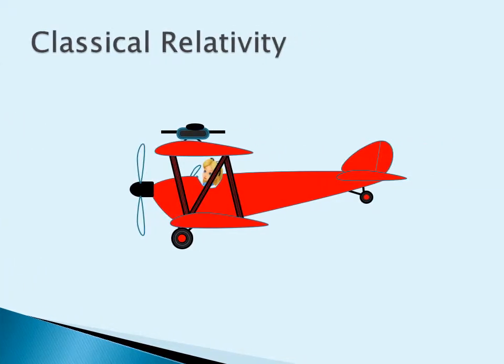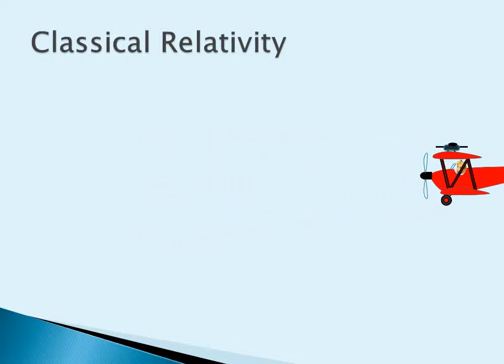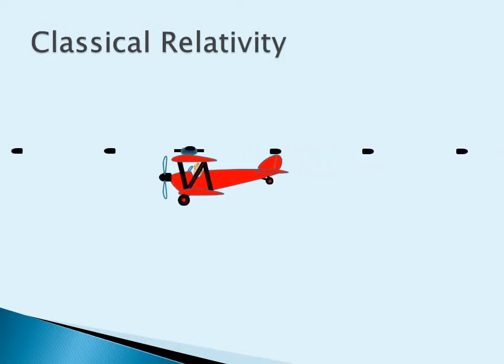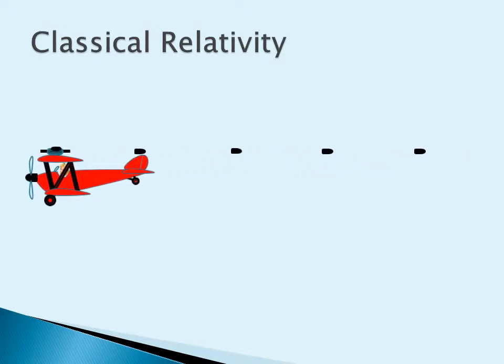Here we have Alice in a biplane with a modified machine gun that fires in the direction of travel and behind her simultaneously. If she flies along at 100 mph and the muzzle velocity of the gun is 200 mph, then relative to the ground the bullets are travelling at 300 mph forwards and 100 mph backwards. We just calculate the bullet velocity by adding or subtracting the velocity of the airplane. Notice that all the bullets are equally spaced.